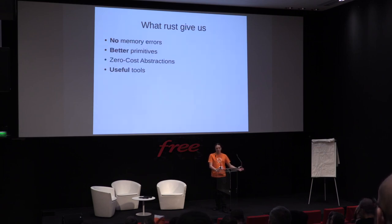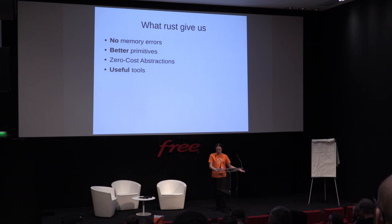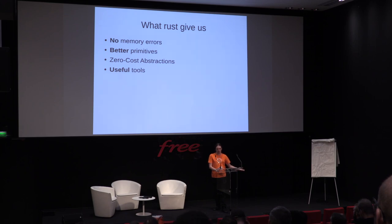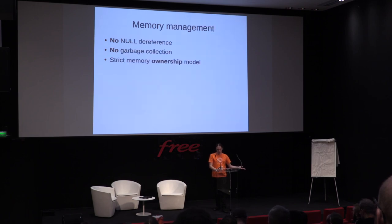There is Rust — a language that gives you, out of the box, the ability to avoid all possible memory errors. You cannot have null pointer references; you cannot have many other issues. It is a language that gives us better primitives, a little higher level than C, so we have better instructions at no extra cost. It also provides a bunch of interesting tools.